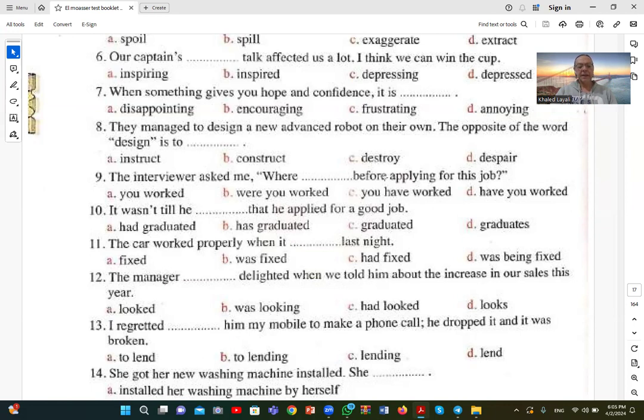Number ten: It wasn't till he had graduated that he applied for a good job. We have two events that happened: one thing happened first and then he applied for the job. So the first thing in the past perfect is 'he had graduated', and then 'he applied' for a good job. Had graduated comes first, then applied. So A, had graduated, is the correct answer.